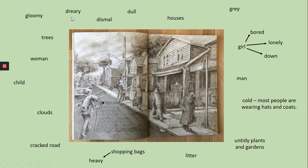Some words I've chosen to describe how it feels in this picture and how these people might be feeling: I think it's a bit gloomy, a bit dreary, a bit dismal and dull. All those words are very similar in meaning - they all just mean a little bit rubbish, a little bit down, a little bit cold. You might want to pause here, add some of my ideas to your sheet of paper, then you've got them for later.